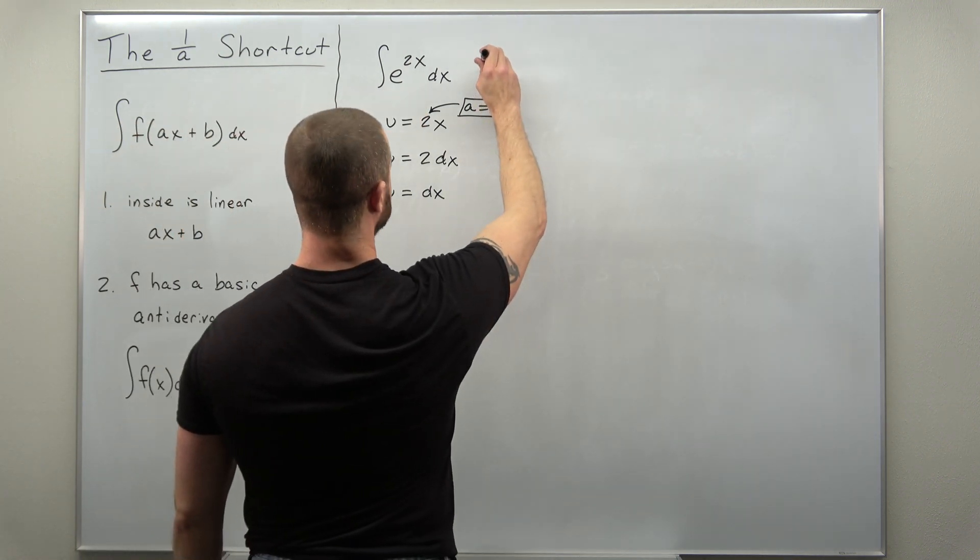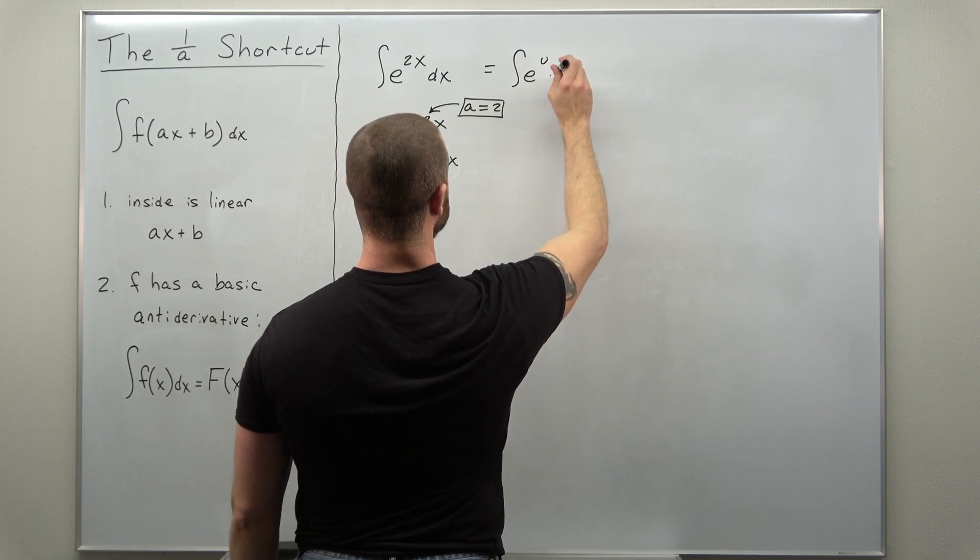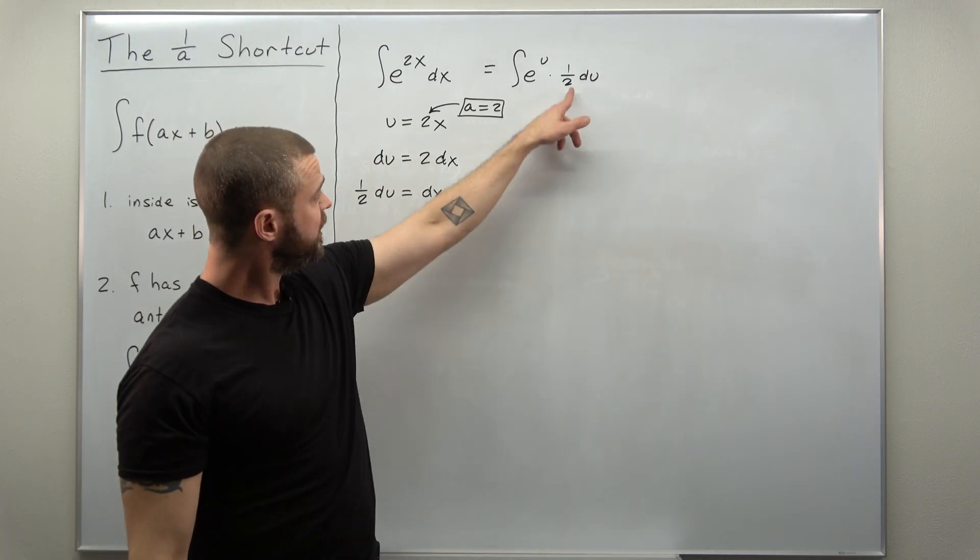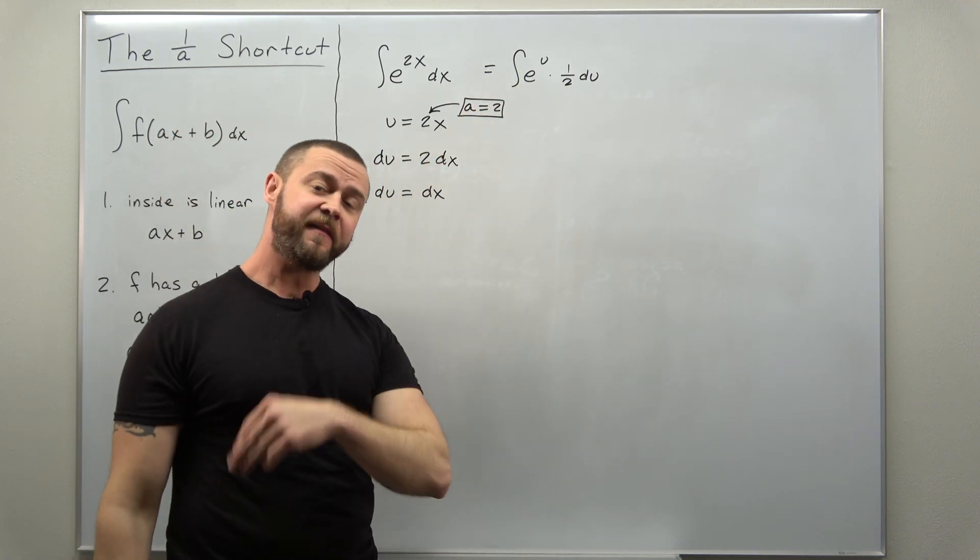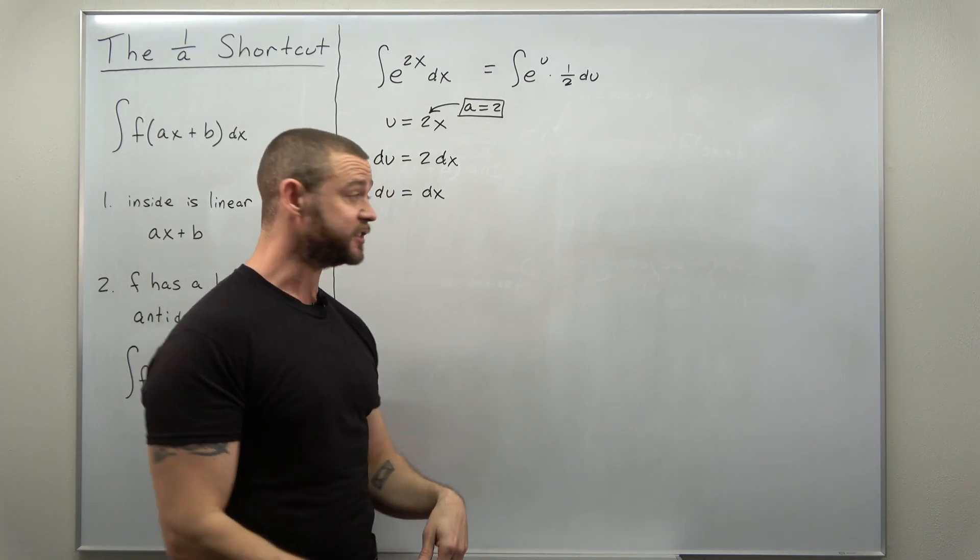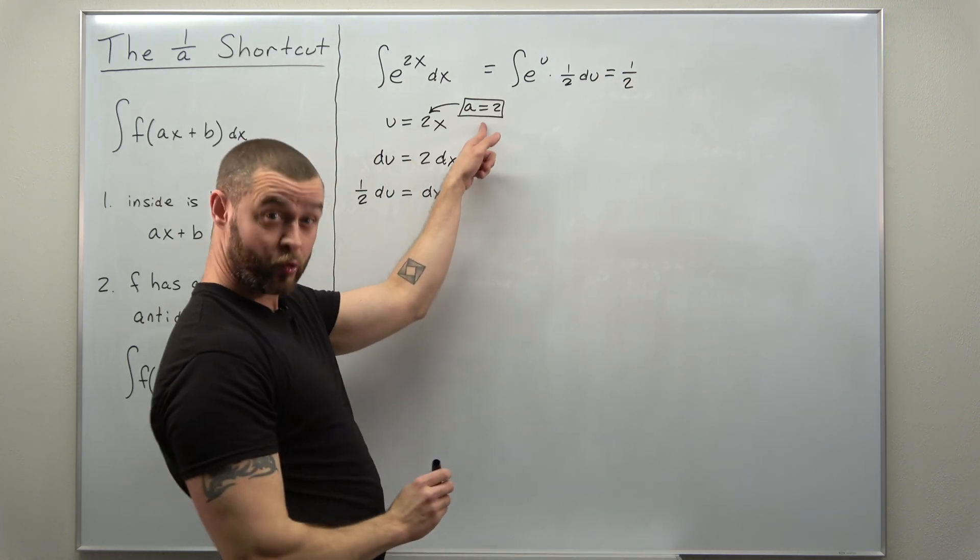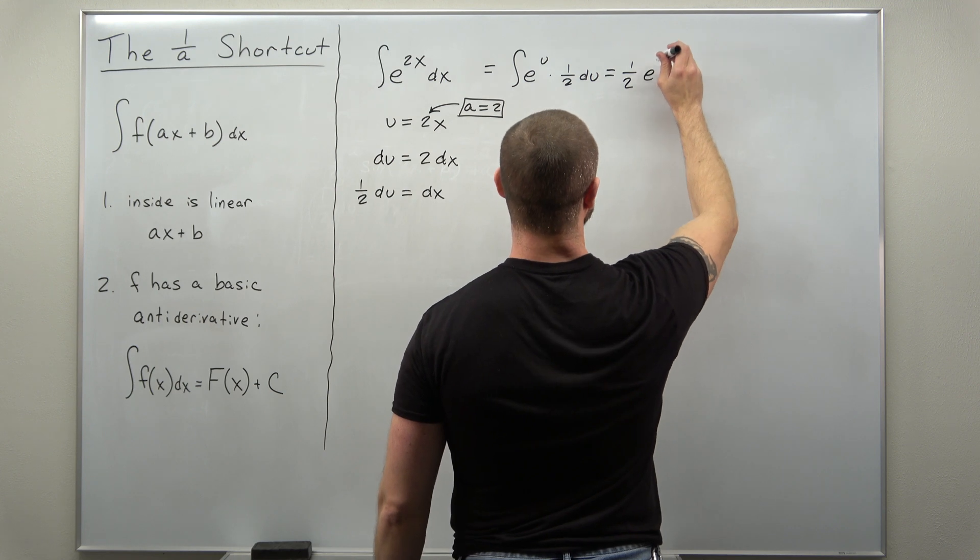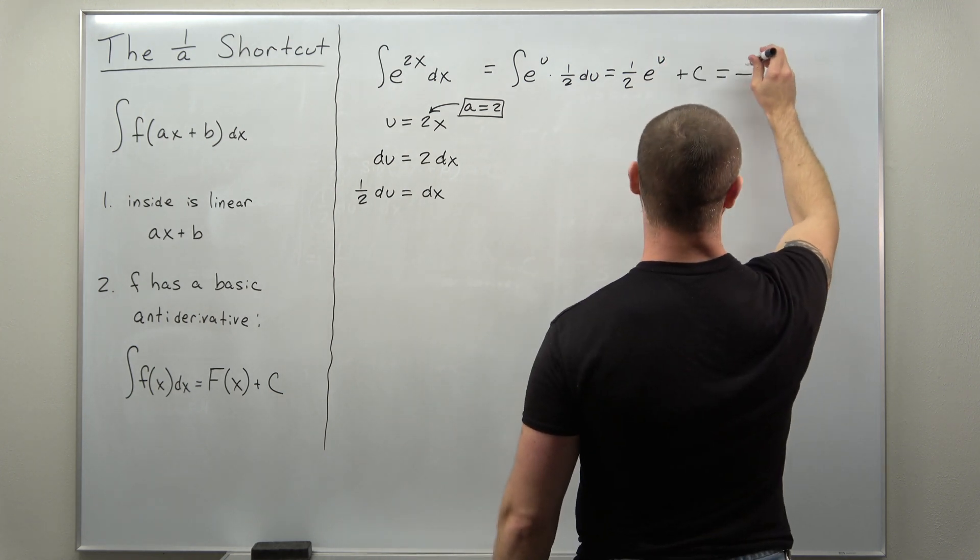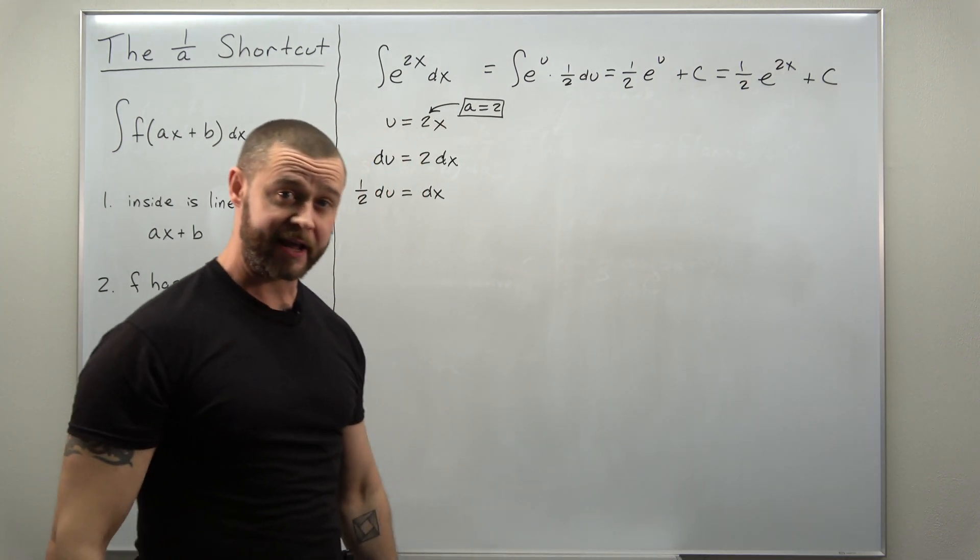We rewrite our integral. We get the integral of e to the u times 1 half du. If you want you can bring that 1 half out and then finding an antiderivative for the exponential function very easy, it's just itself. So we get 1 half, 1 over a, times e to the u, and then we substitute u back in and we get our antiderivative.